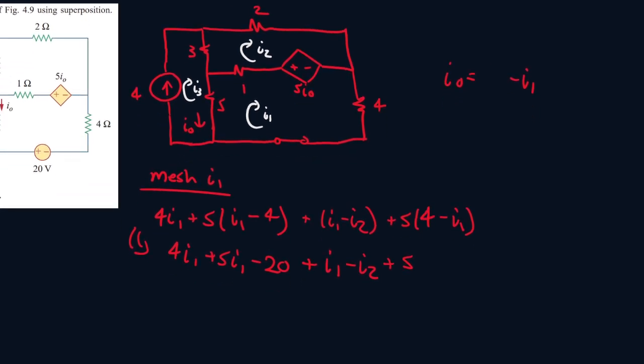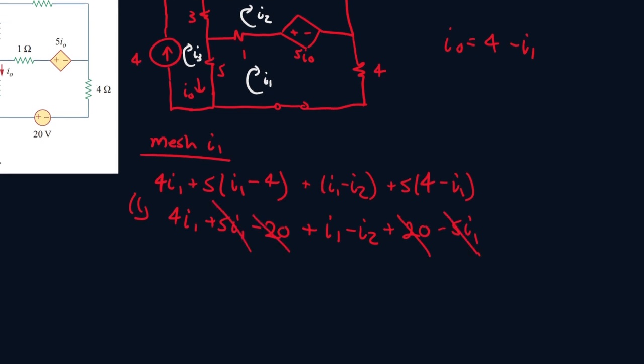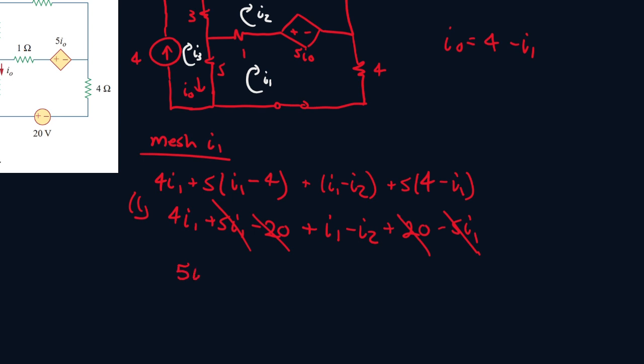So I0 is equal to 4 minus I1. So this one will be 20 minus 5I1. This and this cancels out. Let's see what else. This and this cancels out. So it's 5I1, and minus I2 equals 0. Alright, and so it'll just be 5I1 equals I2.